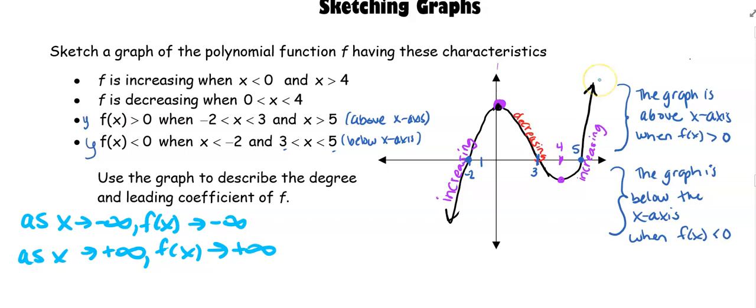Because my end behavior is going in different directions I know that my degree is odd. Because when I go left it goes down and when I go right it goes up, that tells me that I have a positive leading coefficient.